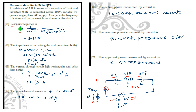The resonant frequency is calculated as F0 = 1 / (2π√LC). So 1 upon 2π with L = 0.1 and C = 1×10⁻³, it will give you 15.92 Hz. At this frequency XL becomes equal to XC and the current becomes maximum.